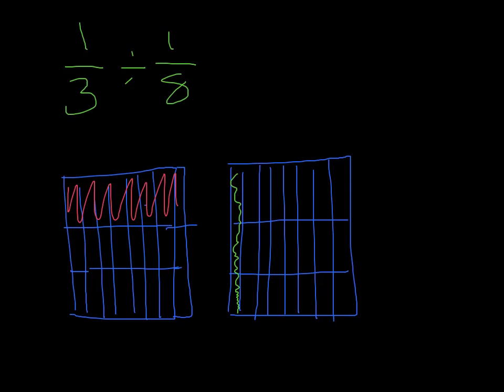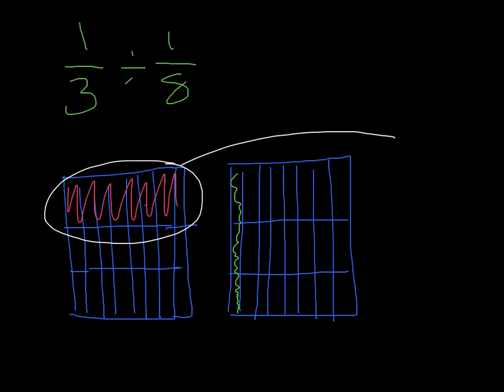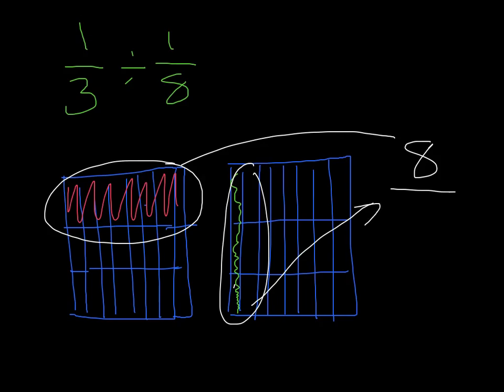I put in my fractions and now I get my answer. My first building gives me my numerator — I count the rooms: 1, 2, 3, 4, 5, 6, 7, 8. So 8 is my new numerator. I count the second building and there are 3 colored blocks, so 3 is my new denominator. This gives me the fraction 8 over 3, which is an improper fraction.